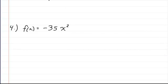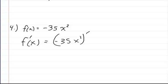Here we have f of x is equal to negative 35x squared. So f of x, the derivative of f of x, is equal to negative 35x squared. And we're taking the derivative of that, so you're going to bring down the 2.